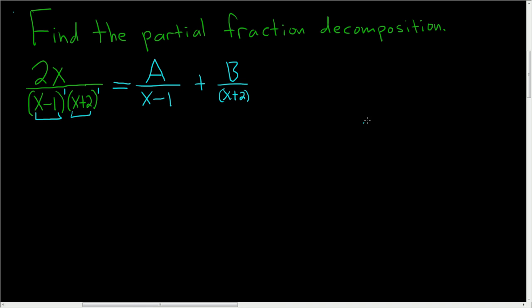If, for example, it had been, say, 2x over (x minus 1)(x plus 2) squared, then it would have been A over x minus 1 plus B over x plus 2. But then this appears twice, so you got to do it again, plus C over (x plus 2) squared.